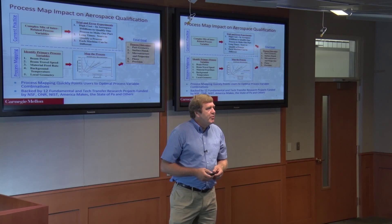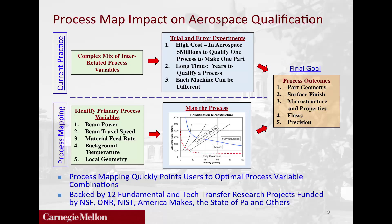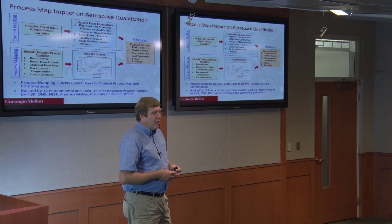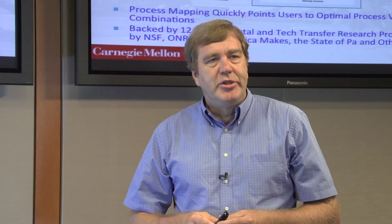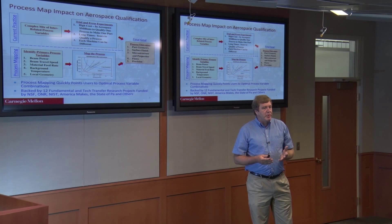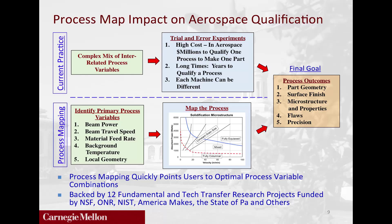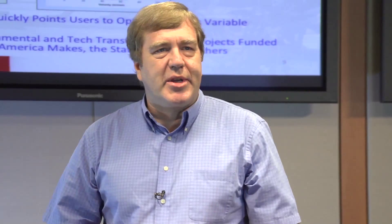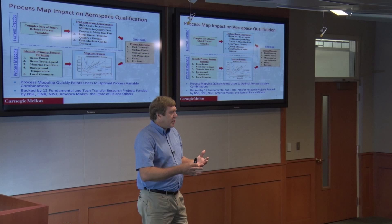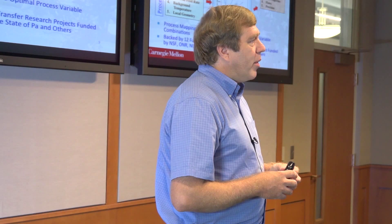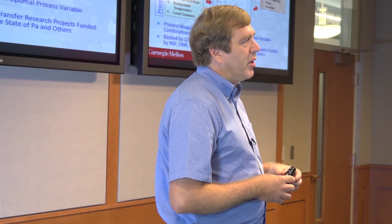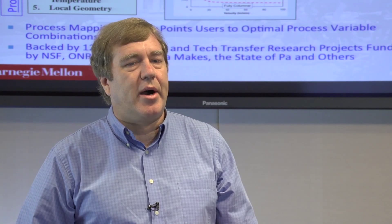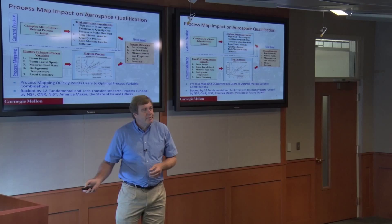To give you a sense of how this can impact industry, I'll give one example for aerospace. In the aerospace industry — particularly thinking about that GE fuel nozzle, one of our major collaborators — going from the concept of making a fuel nozzle by additive manufacturing to actually having it qualified took about four years and millions of dollars of testing. What I call intuitively guided trial and error experiments. Whereas with process mapping, we identify key process variables, map out the process methodically, and show how to get the different process outcomes and what changing one outcome does to the others.